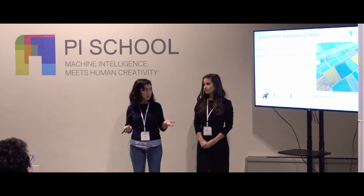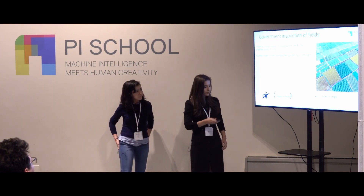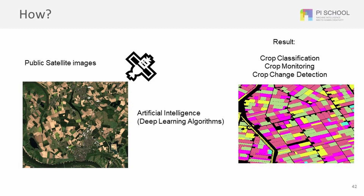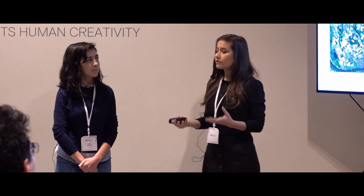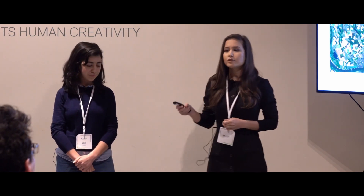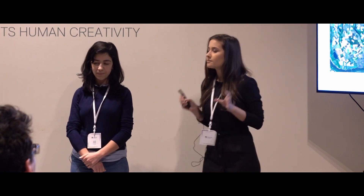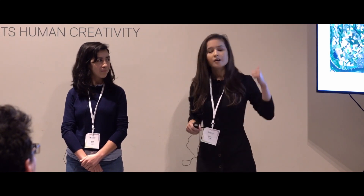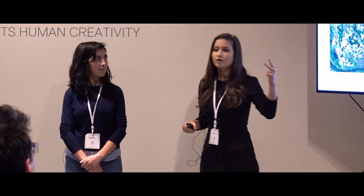As you saw, there are three use cases and from these three use cases we use one same technology. In our solution we have proposed an automated framework using information from space — from the satellite constellation — and we use the power of artificial intelligence to extract the most valuable knowledge from this data, achieving three concrete results: crop classification, crop monitoring, and crop change detection.